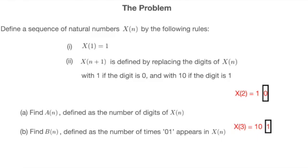With that said, the question requires us to figure out how many digits are there in X(n), preferably giving a formula in closed form for the answer. The second part of the question asks about the number of consecutive 01 in X(n).